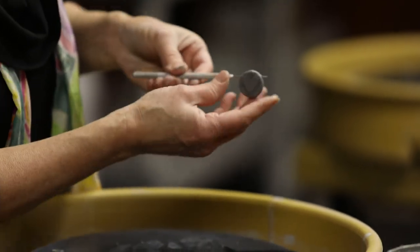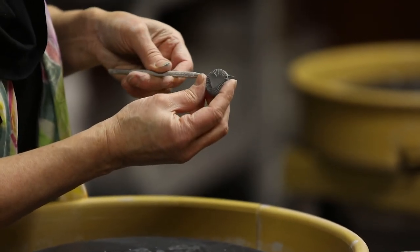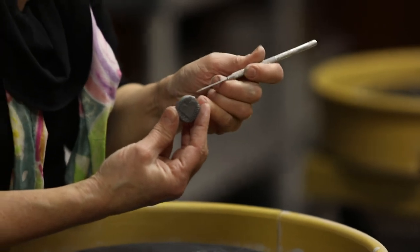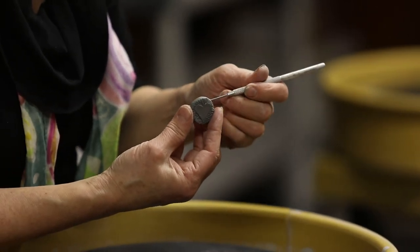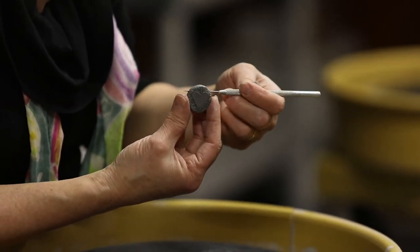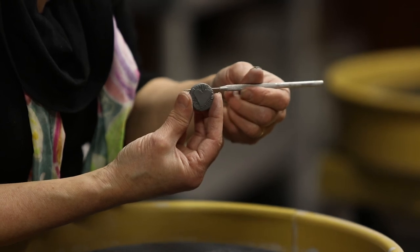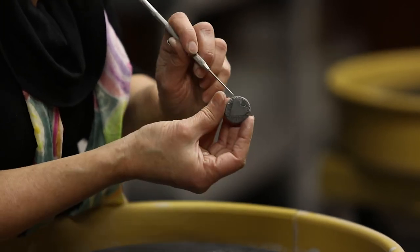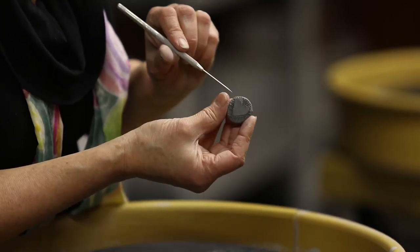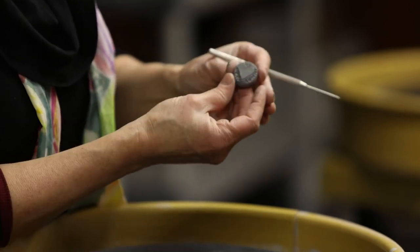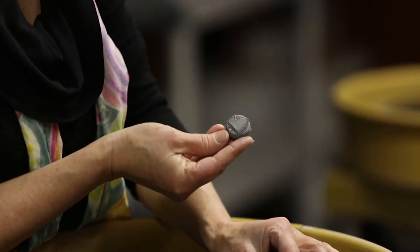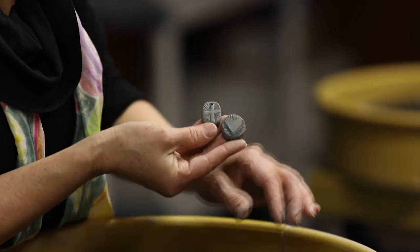And this one we would just stretch that hole going in from either side to really make sure that it's not going to shrink shut. And then you'd be able to slide your necklace cord through. I hope you enjoyed this. Thanks for watching.